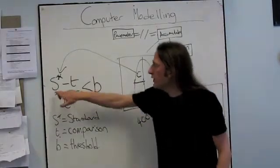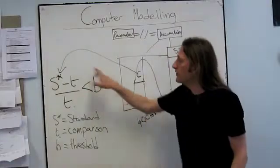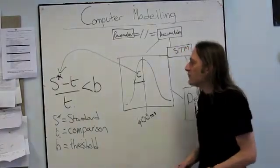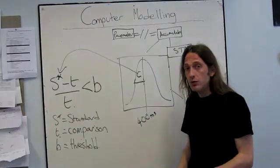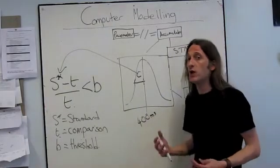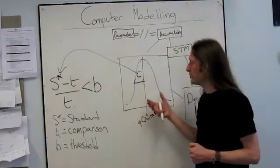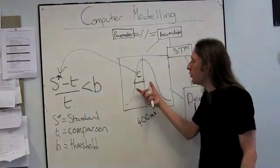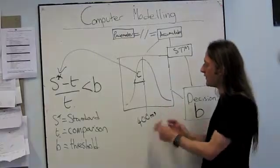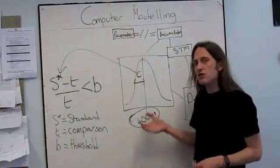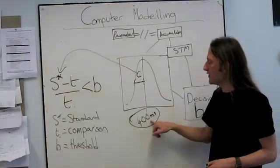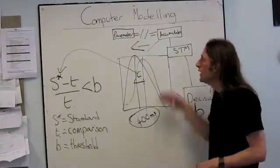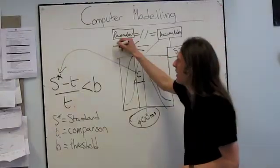On each trial we're going to be getting a value for S that we plug into this equation and decide whether to say yes or no. To make things slightly more complicated, if you remember when we talked about modelling children's data, children do this weird thing where they have a tendency to remember the standard duration as being shorter than it actually was. So we need a parameter here that controls not the variability, but where this mean is located.